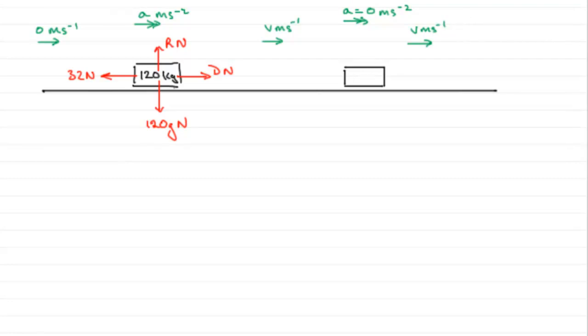So what does that mean at this stage? Well, it means that the driving force there, d newtons, must equal the resistance of 32 newtons. Let's mark in the weight again, 120g newtons, and that contact force of r newtons.